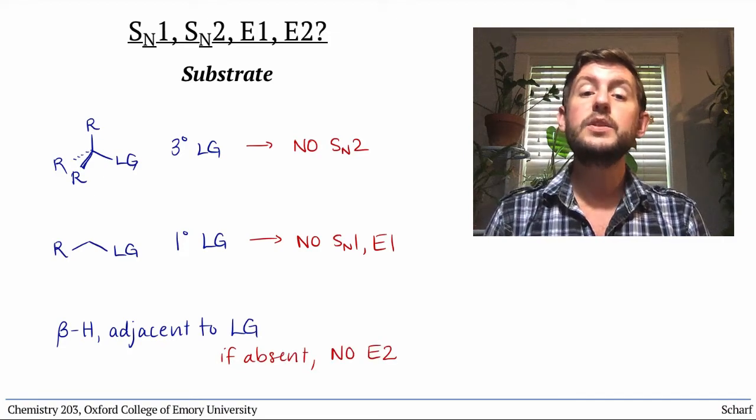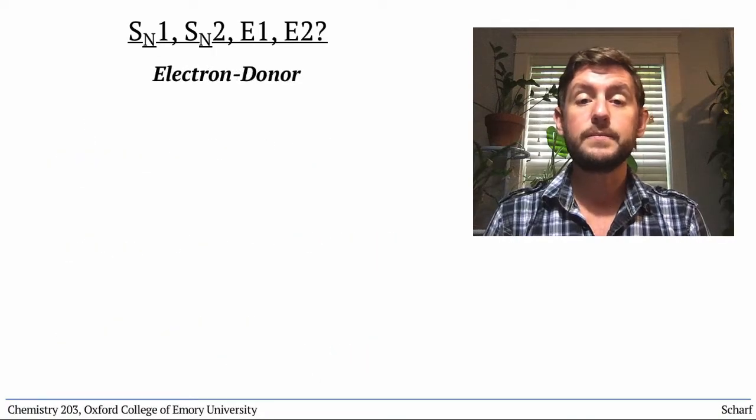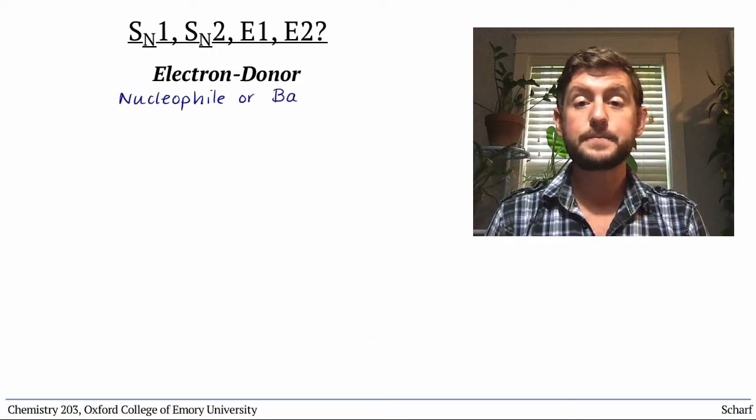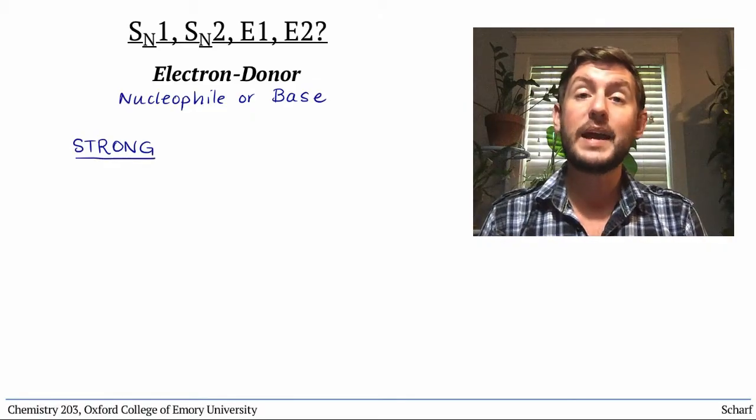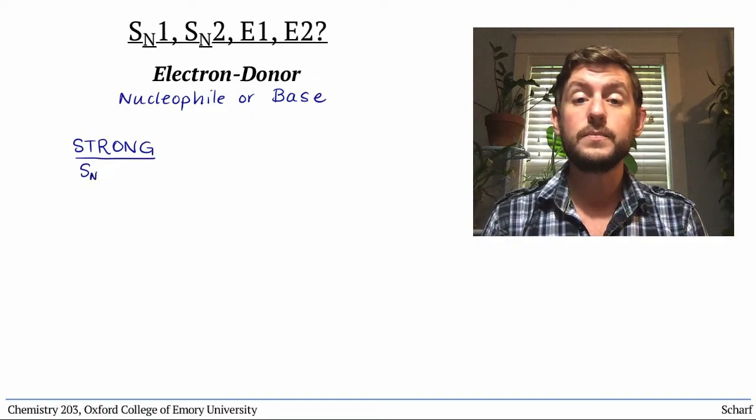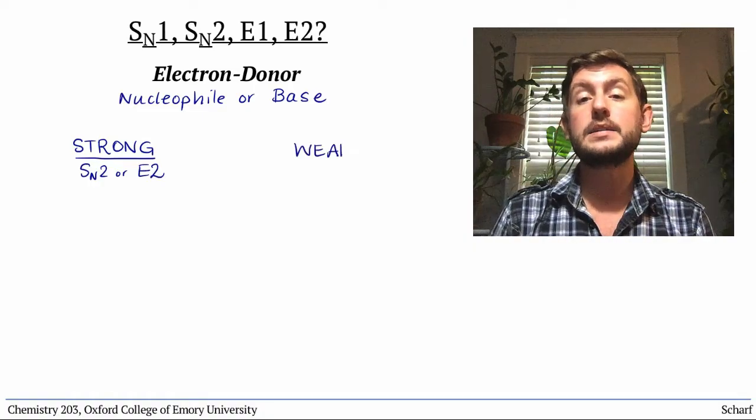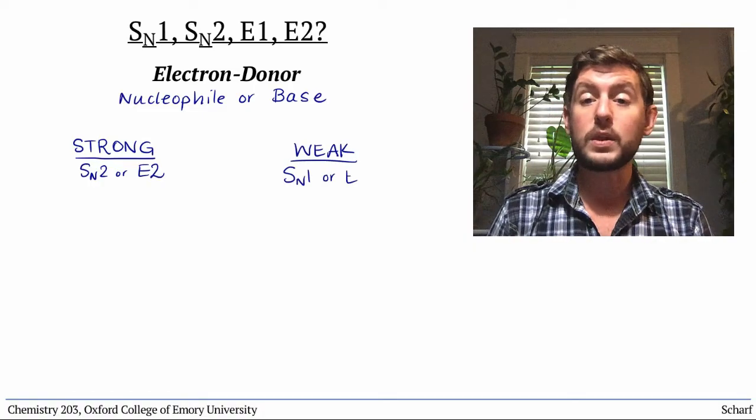Next, consider the nature of the electron donor, the nucleophile or base. If it's strong, that lends itself toward SN2 or E2. If it's weak, that indicates that SN1 or E1 are more likely.